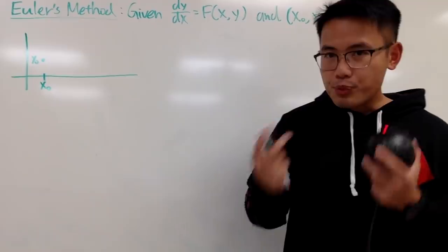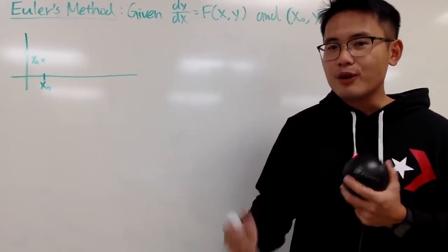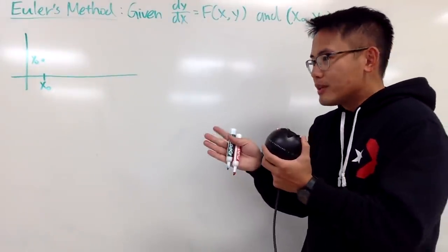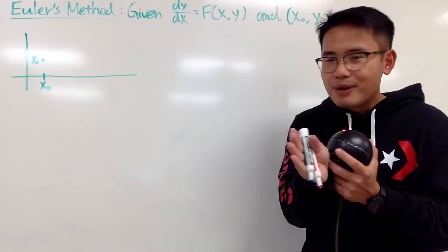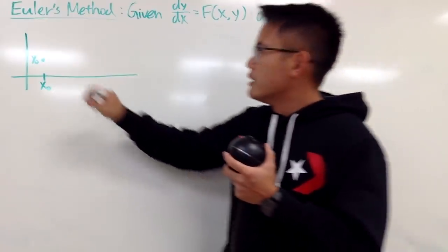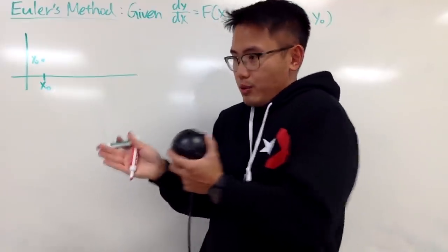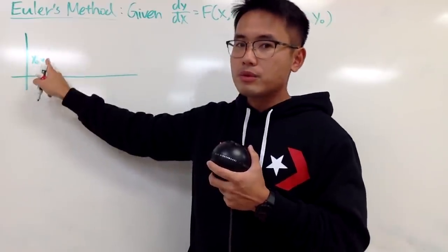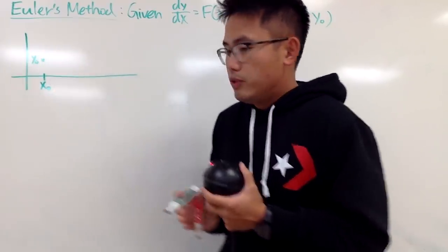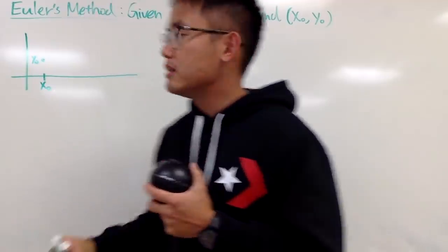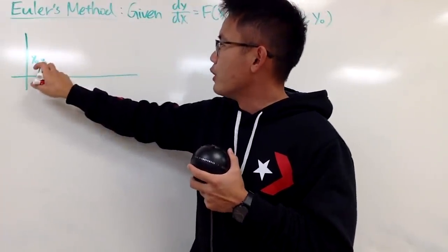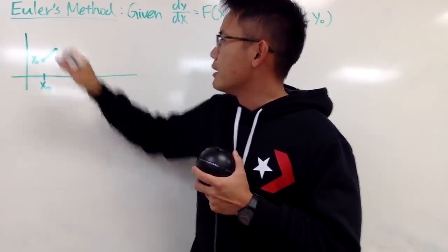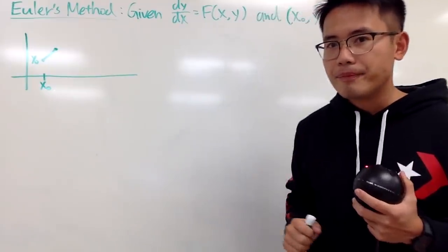This is actually pretty similar to the idea of the slope field, if you have done that already. But the idea is that once you have the slope, it pretty much tells you how far you have to turn. If you know the slope, you have the direction. So maybe the slope is pointing that way, and you can just take a step forward like that. Suppose the slope tells me I have to face that way, and then I will just walk this much and stop. Every time, just take one step forward.